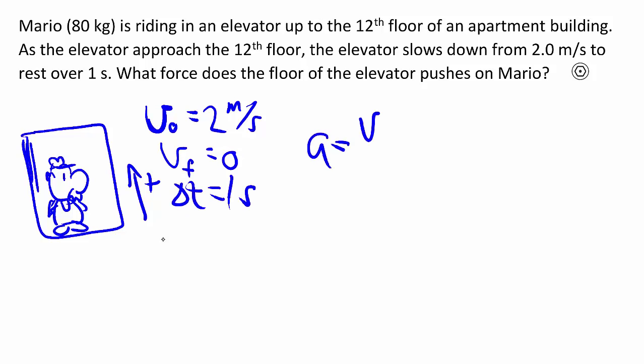And so the acceleration could be simply, we've done this many times, 0 minus 2 m/s divided by 1 second, giving us negative 2 m/s squared, which makes sense, because we are accelerating downwards to slow down. When we're going up, to slow down, we have to accelerate downwards.